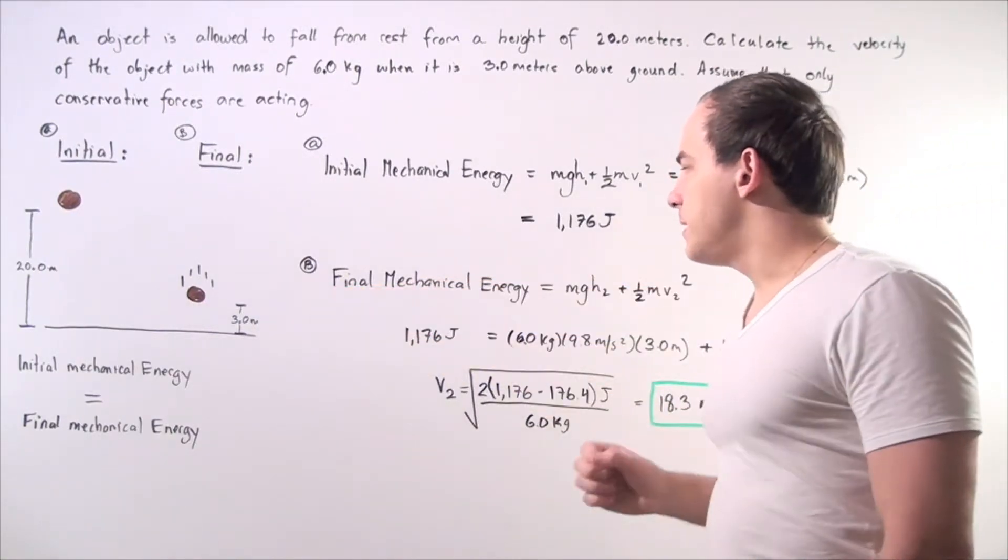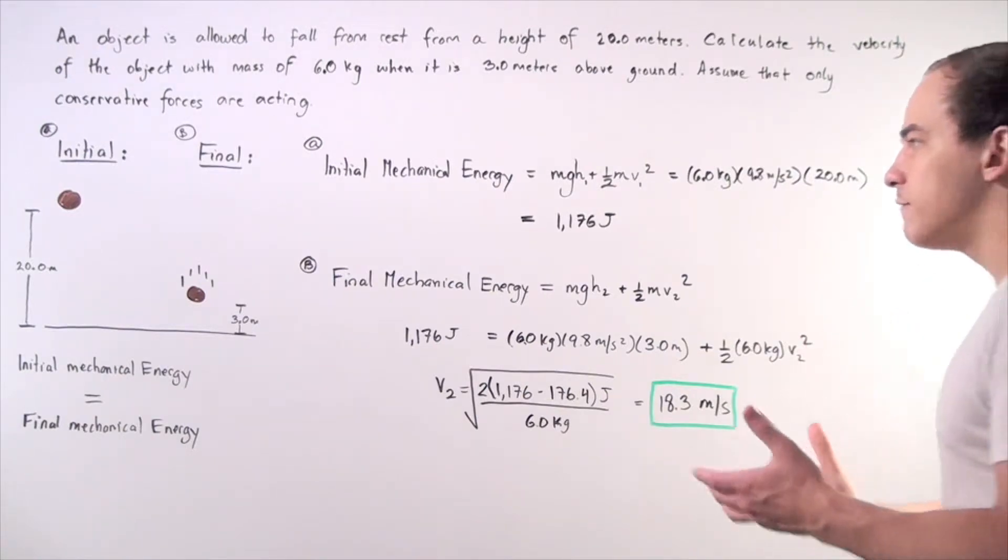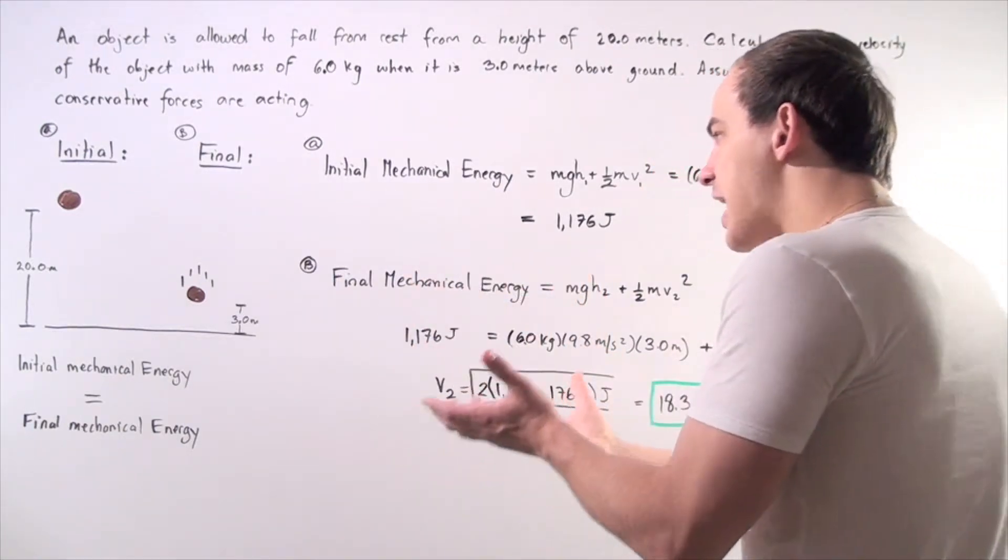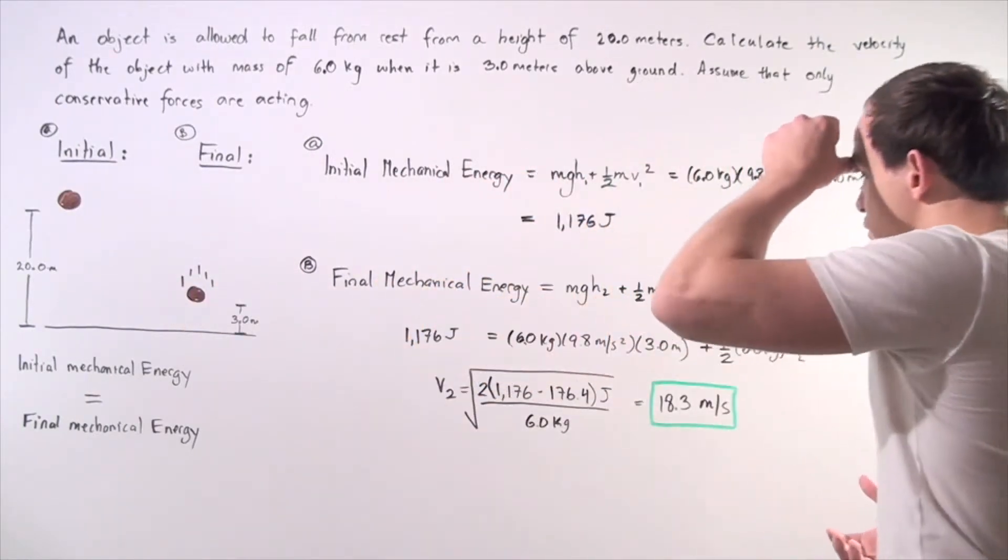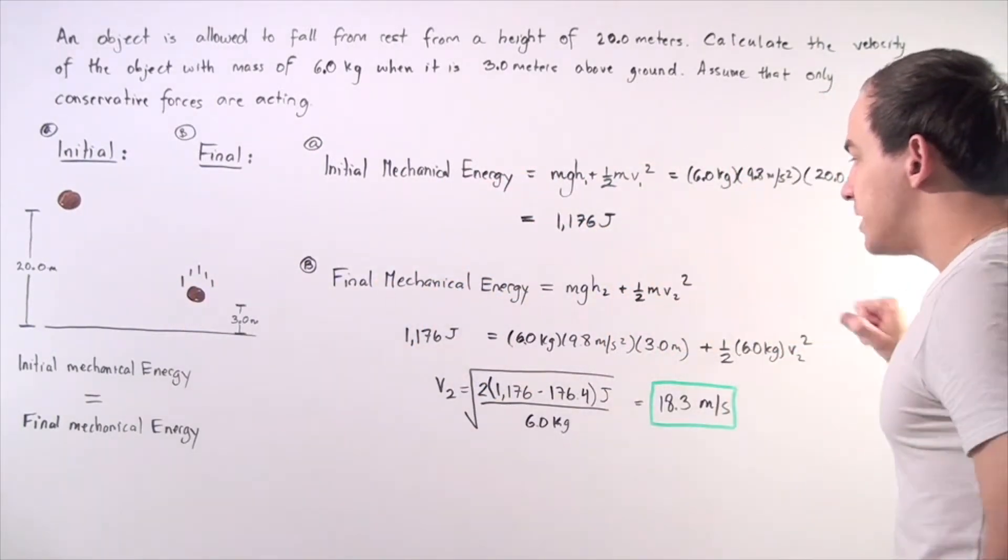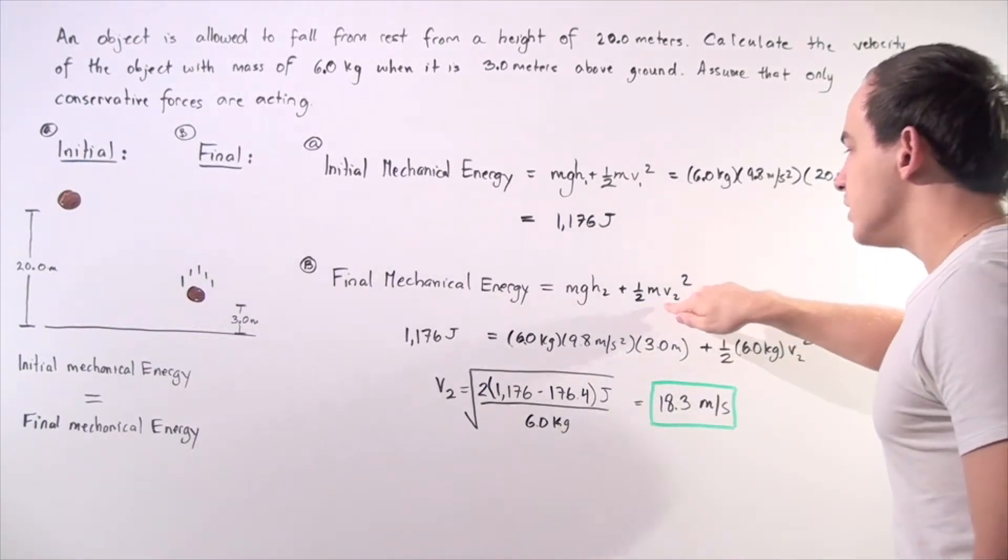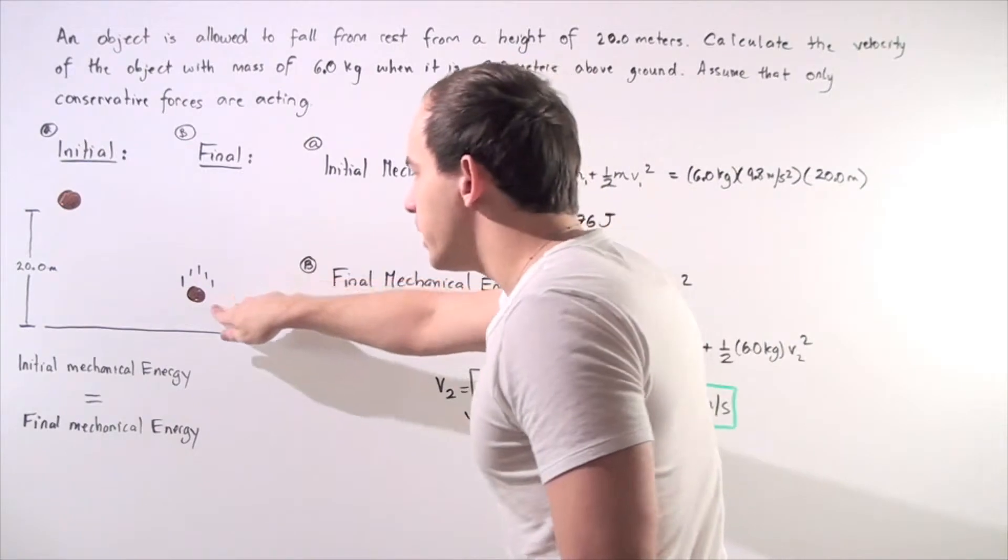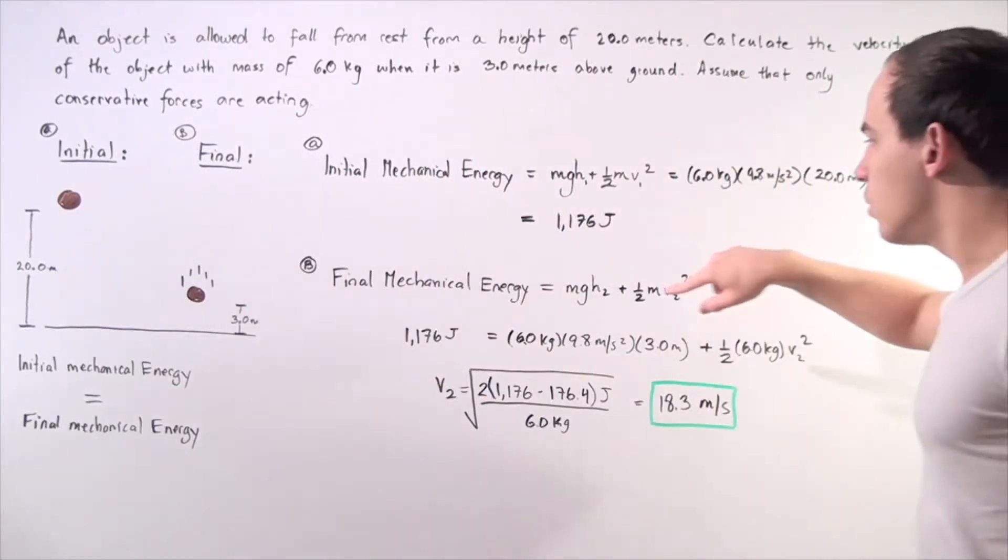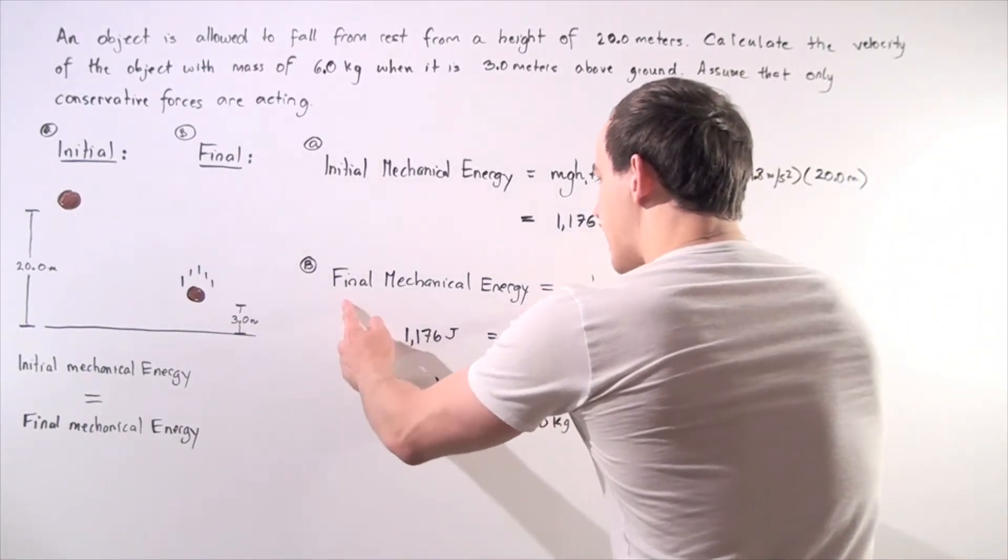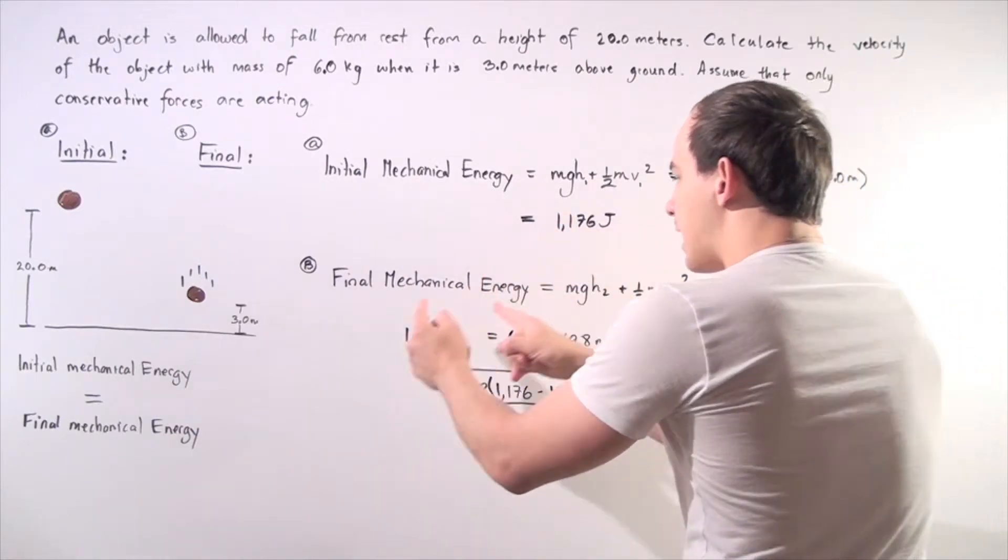Let's begin with part B. The final mechanical energy is equal to our sum of the final kinetic energy and the final gravitational potential energy. So now this term is no longer 0 because we want to find the velocity. Our object is traveling with some velocity, it is in motion.